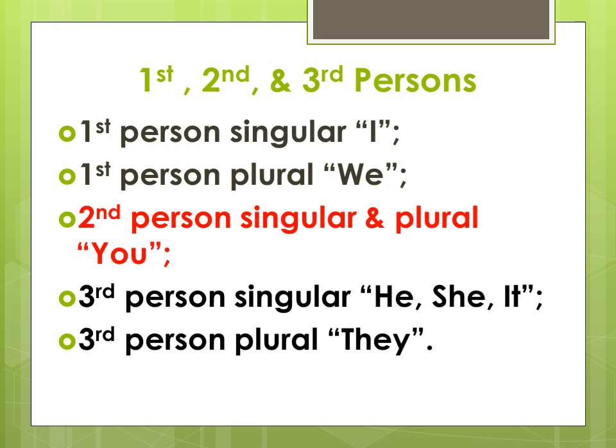The third person singular — 'he', 'she', 'it' — and the third person plural, 'they', all refer to the absentees; that is, persons or things not part of the conversation.